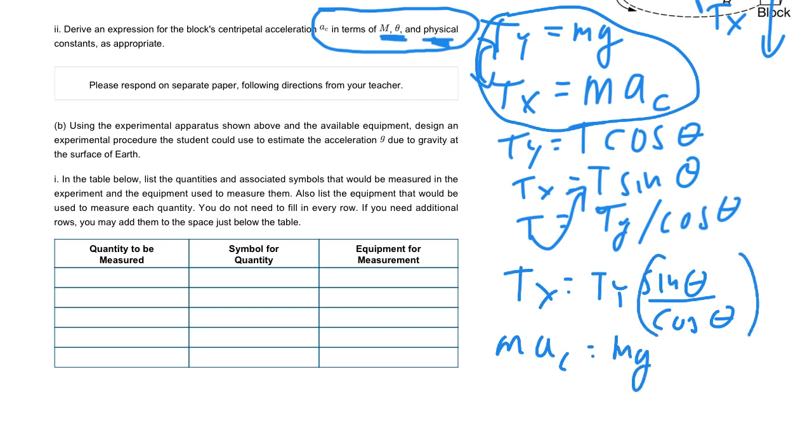Remember back at the beginning we could write TX is MAC, TY is MG, and then sine theta over cosine theta we could just write as tan theta. One final step - the masses cancel, so our final answer would be AC equals g tan theta. Check your answer with the original question - we have g, we have theta, we're allowed to use M theta or any constants, and g is a physical constant.